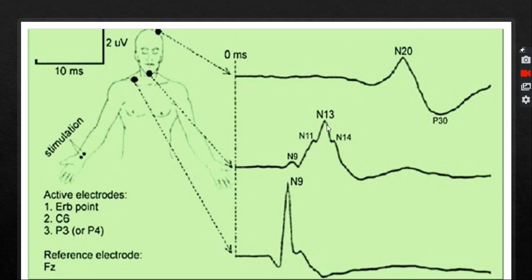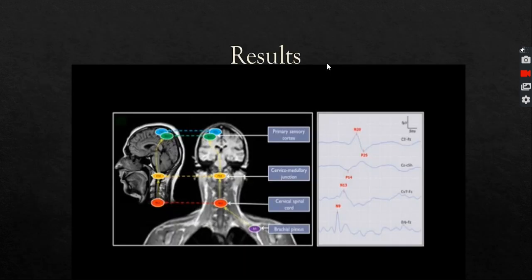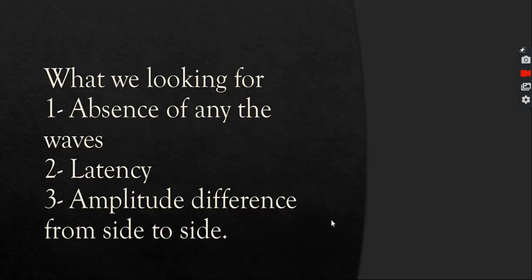These are the waves. This is what you're going to see on your screen. You'll see the N9 reflecting the brachial plexus and N13 reflecting the cervical medullary or the cord. You'll see the N20 and the P30 or P25 or P23 reflecting the primary somatosensory cortex. This is another picture showing the N20, the P25, the N13, and the N9.